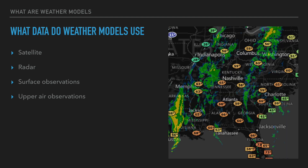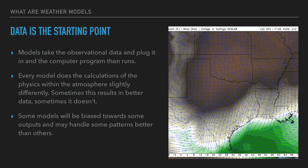So what data do weather models use? Those predetermined variables include satellite, radar, surface observations, upper air observations — basically any type of weather observations that a model can ingest, it does. It takes that in and then it begins its calculations. This data is the starting point. Every model will do this a little differently; the calculations are going to be slightly different. This results in better data sometimes, sometimes it doesn't. Some models are biased — they'll handle some patterns better than others. That's why over time you'll develop your own favorite model to look at.